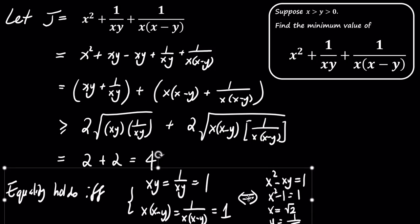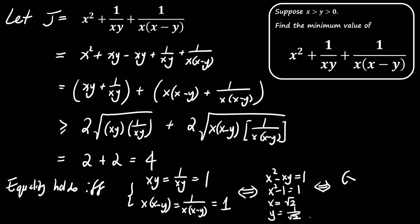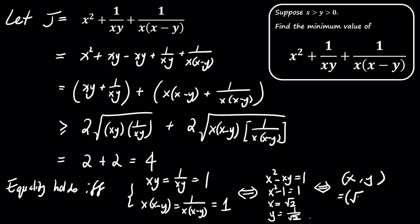So when x is the square root of 2 and y is 1 divided by the square root of 2, equality holds, and we find that the minimum value of J is 4.